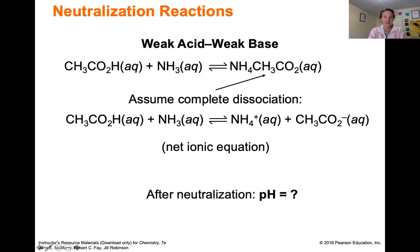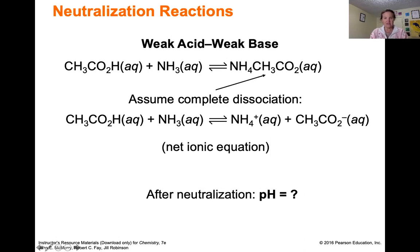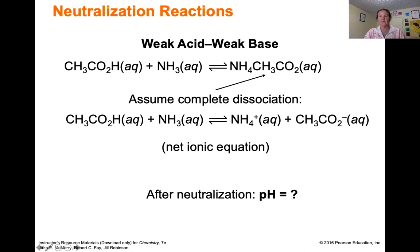With a weak acid and weak base, it is harder to tell what the pH is going to be. With acetic acid and ammonia, the ammonia takes a proton off the weak acid leaving behind acetate — the conjugate base of acetic acid — and forming NH₄⁺. So you have both a weak acid and a weak base in solution and the pH is uncertain, but you can go back and compare the Ka and the Kb to see whether the weak acid is stronger than the weak base is basic.